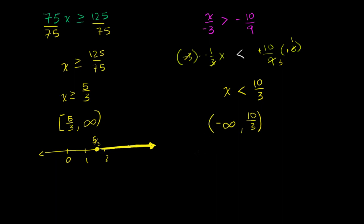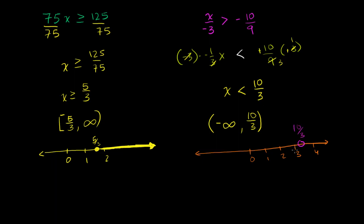Let's draw the solution set. So 10 over 3 — we might have 0, 1, 2, 3, 4 on the number line. 10 over 3 is 3 and one-third. We're not going to include that point — it's less than 10 over 3, so 10 over 3 is not in the solution set. Everything less than that, but not including 10 over 3, is in our solution set.